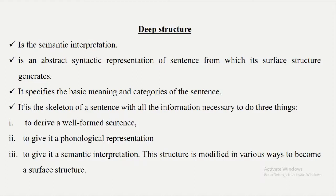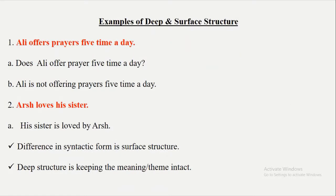Deep structure specifies the basic meaning and category of the sentence. It is a skeleton of a sentence with all the information necessary to do three things: to derive a well-formed sentence, to give it phonological representation, and to give it semantic interpretation. This deep structure is modified in various forms to become a surface structure. So deep structure is semantic interpretation and surface structure is the syntactic form.